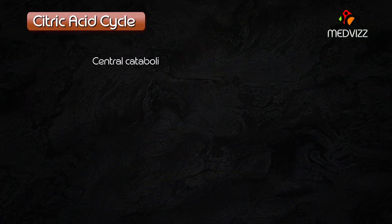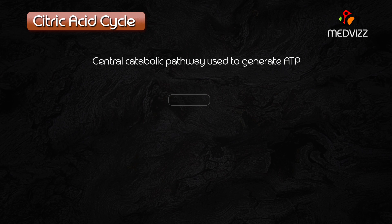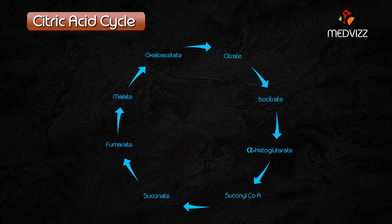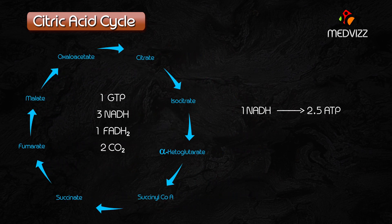The citric acid cycle is the central catabolic pathway used to generate ATP by means of oxidation of acetate. That acetate is converted into carbon dioxide and water. Each turn of the cycle produces 1 GTP molecule, as well as 3 NADH, 1 FADH2, and 2 carbon dioxide. Here, 1 NADH is equal to 2.5 ATP equivalents.